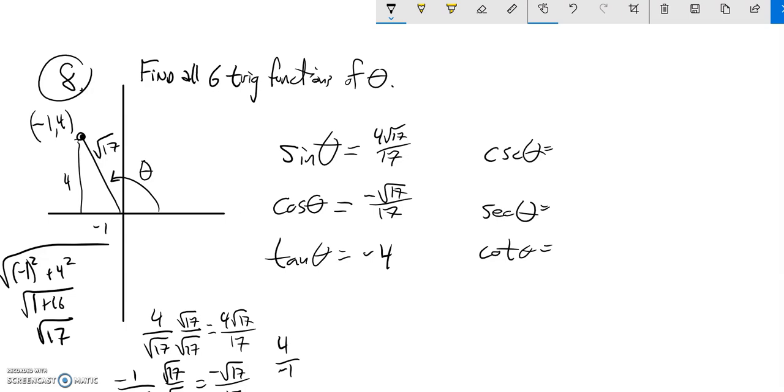Now I can do those reciprocals. Cosecant is sine switched over. If I go back to sine, I originally had this. So if I flip that over, that's going to be square root of seventeen over four.